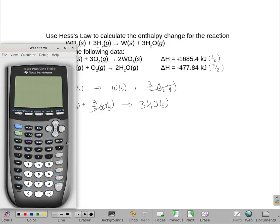All right, so I'm going to do all that in the calculator. So 1685.4 times one half minus, because that's 477, 477.84 times one and a half, because it's three halves.